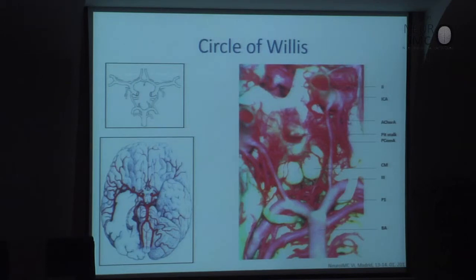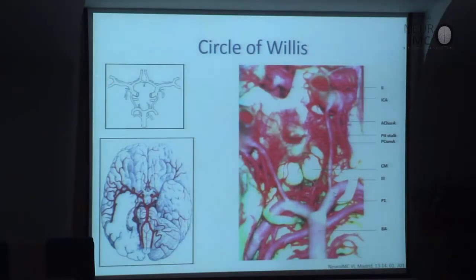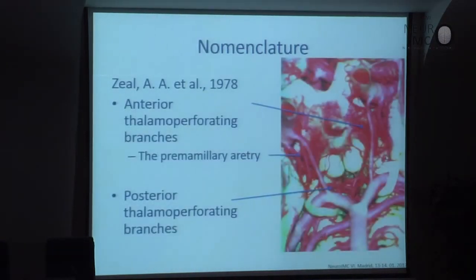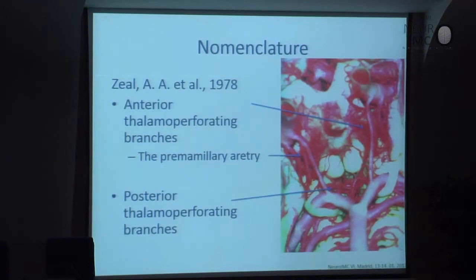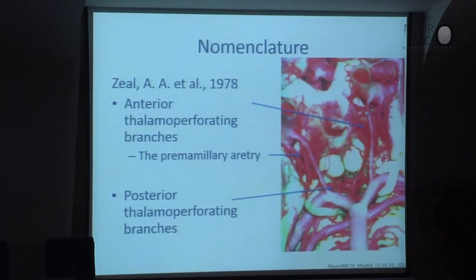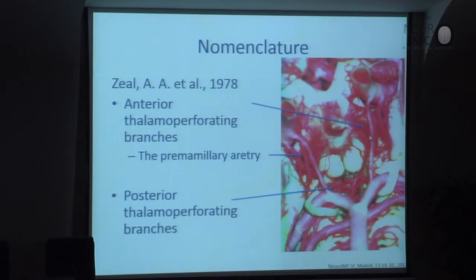This is the Circle of Willis. The basic structures are: the optic nerve, the internal carotid artery, the anterior choroidal artery, the PCOM artery, the posterior cerebral artery with its P1 and P2 segments, the third cranial nerve, and the basilar artery. We used the nomenclature of Zeal (1978), under which perforating branches are divided into anterior thalamoperforating branches — mainly from the posterior communicating artery, including the most important one, the premammillary artery — and posterior thalamoperforating branches, mainly from the P1 segment of the posterior cerebral artery.